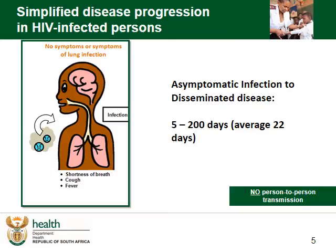Once the cryptococcus has been activated, it creates a cryptococcal antigenemia in the blood. This can be detected through a cryptococcal antigen test. At first, it is asymptomatic. This asymptomatic clinical phase can vary from 5 days to 200 days, but has an average of only 22 days. That means from the moment that the cryptococcus is reactivated in the blood, disseminated disease can take as little as 3 weeks.